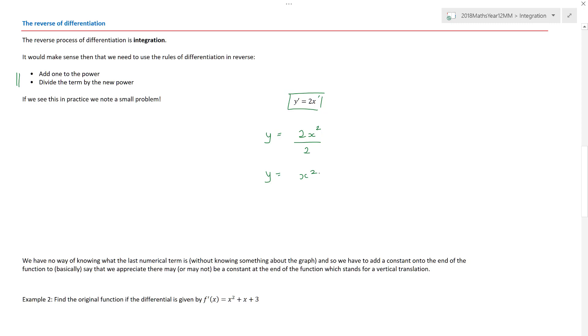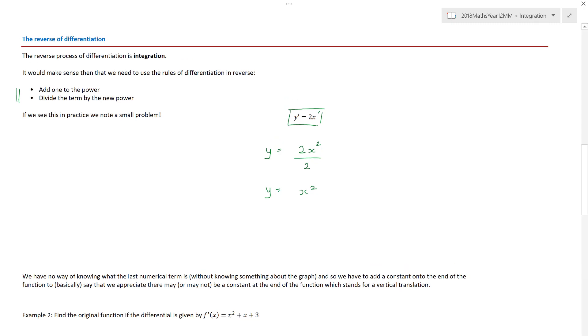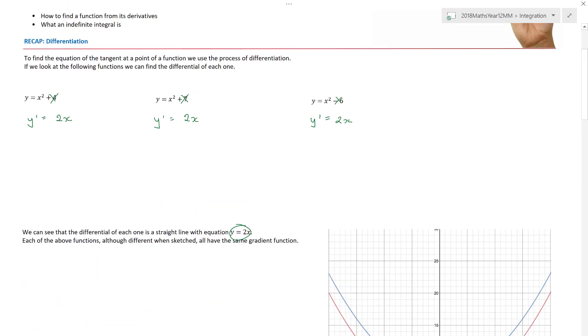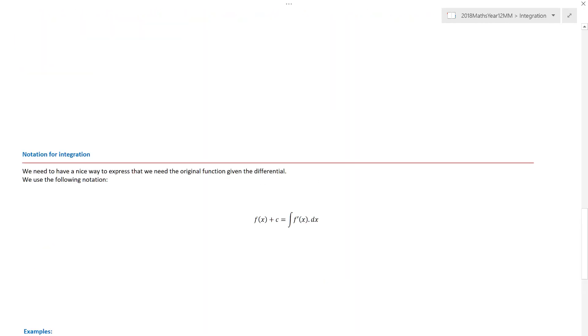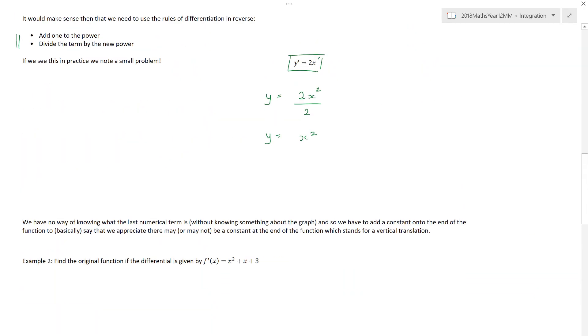Hold on a moment. There's a small problem. Yet y equals x squared. But if we go back to my original functions, one of them had a plus 4 on the end. One of them had a plus 7 on the end. And one of them had a minus 6 on the end. And yet this process here only seems to give me the x squared term. And that's actually the point of this integration.